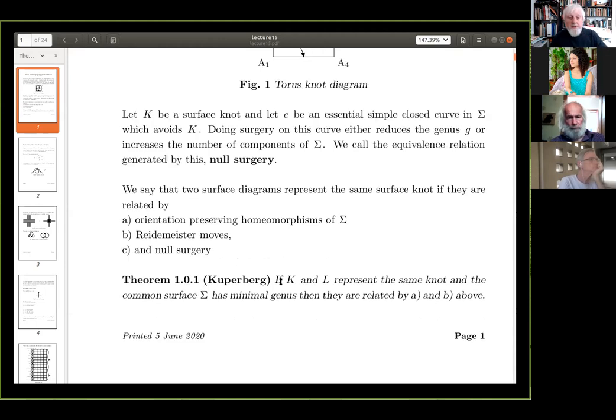And, now, the result of Kuperberg is if K and L represent the same knot, surface knot, and the common surface sigma has minimal genus, then they are related by A and B above. In other words, you can get from one to the other without doing any surgery. Well, you can't, obviously, do surgery which decreases the genus, because they're all minimal genus, so the only surgery you can do is to increase the genus. But you don't have to do that. That's basically Kuperberg's theorem.